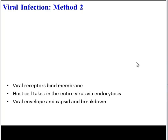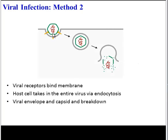Here is the second method. First, the viral receptors bind the membrane, just like in the method we saw before. But here things are different. At this point, the host cell will take in the entire virus via endocytosis. Endocytosis is when the cell membrane engulfs a particle, pinches off, and takes it in. At this point, the envelope and the capsid will break down, releasing the virus's genetic material into the cell.